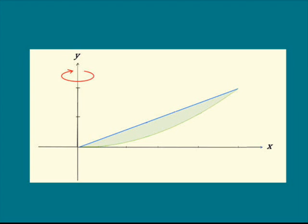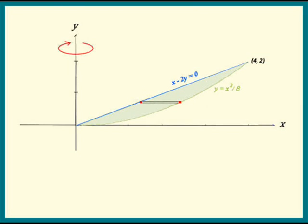Now let's look at this region. Think of it going around the y-axis. How should we slice it? Do we use vertical slices or horizontal slices in order to use the disk method? We'll have to use horizontal strips. Here's one of them. How thick is it? It's a small piece of y — we'll label it dy. And that's a clue that this problem is going to be an integral with respect to y.